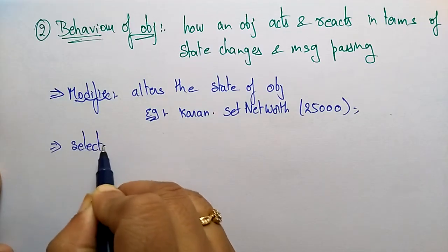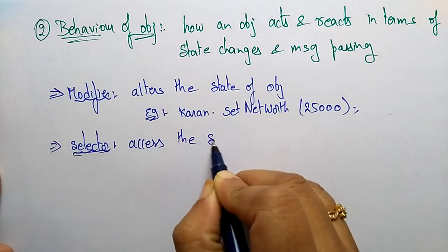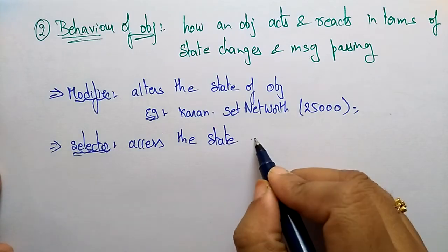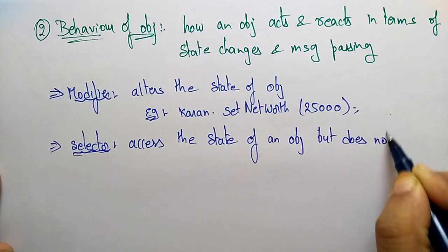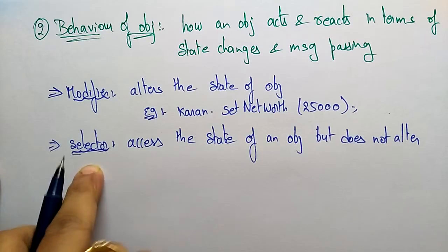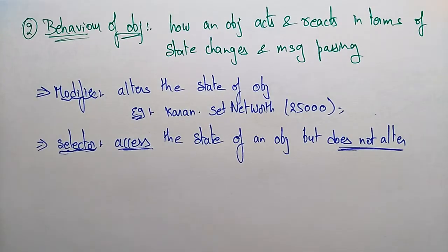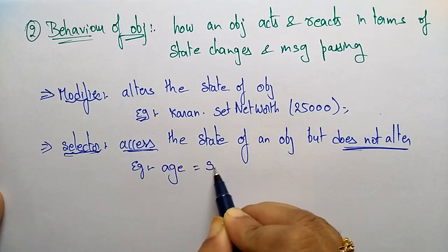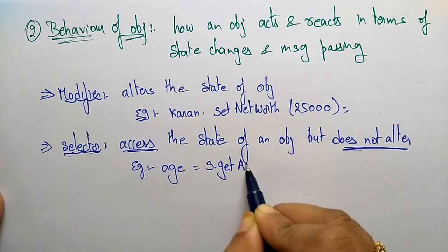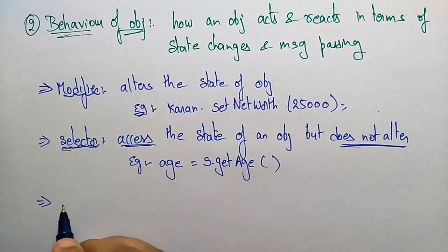Next is a selector — a selector accesses the state of an object but does not alter it. It just reads the state. For example: age = s.getAge() — it gets the age and stores it. That is one behavior. Next is a constructor.